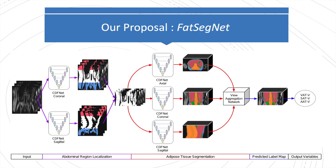In this work, we introduce FACSEG-NET, a novel fully automated deep learning pipeline based on our CF-NET architecture to localize and segment visceral and subcutaneous adipose tissue. To constrain segmentations to a consistent anatomically defined region, the proposed pipeline consists of three stages.